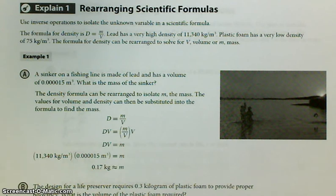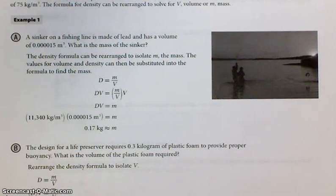The formula for density is density equals mass divided by volume. Lead has a very high density of 11,340 kilograms per cubic meter. Plastic foam has a very low density of 75 kilograms per cubic meter. The formula for density can be rearranged to solve for v, volume, or m, mass, depending on what you need.